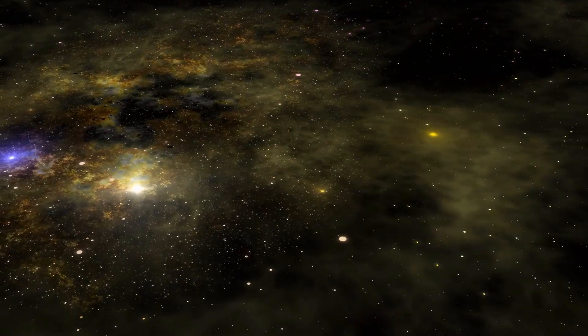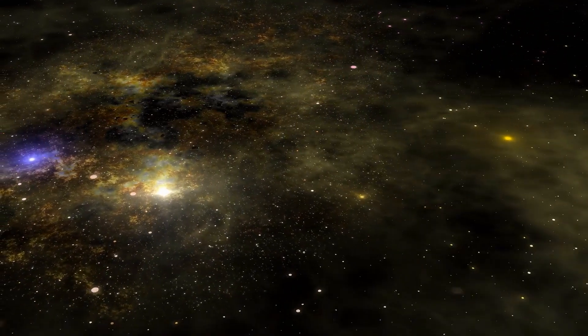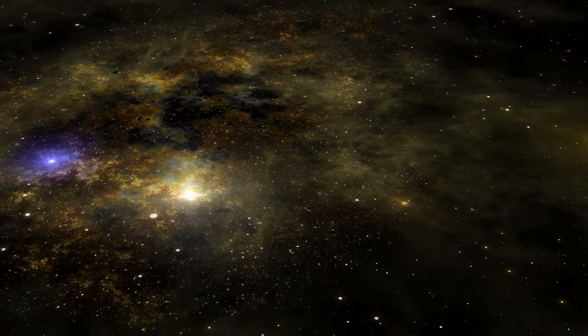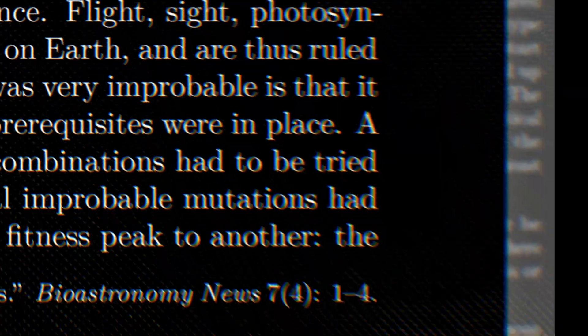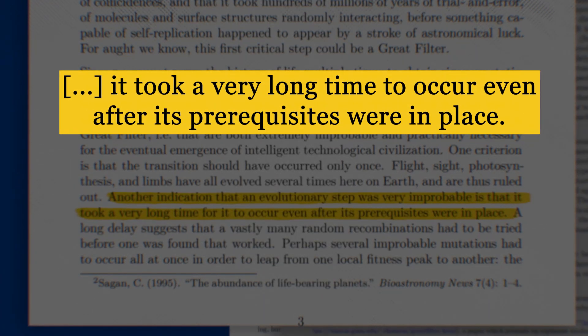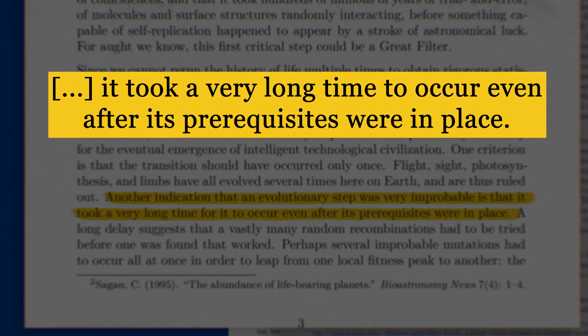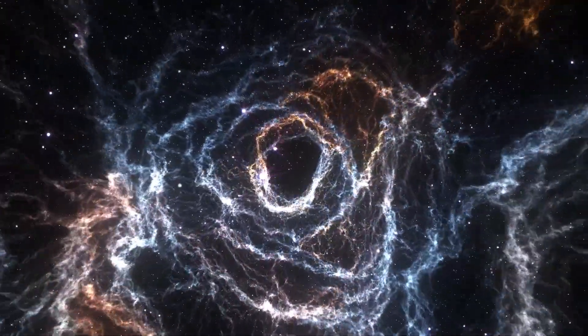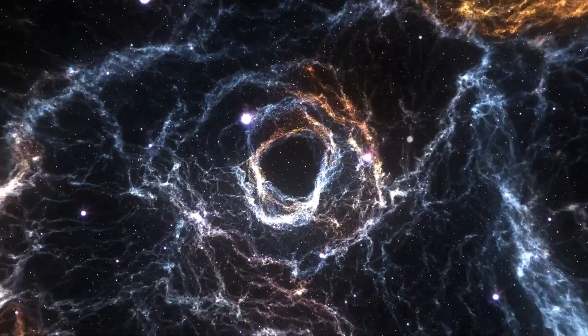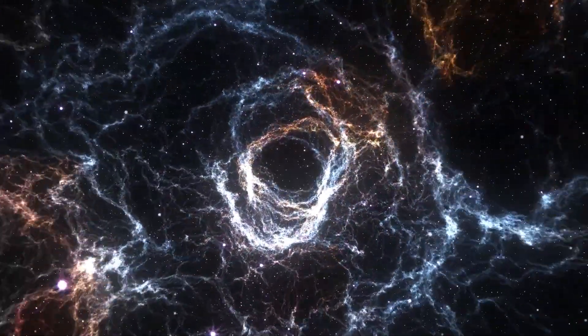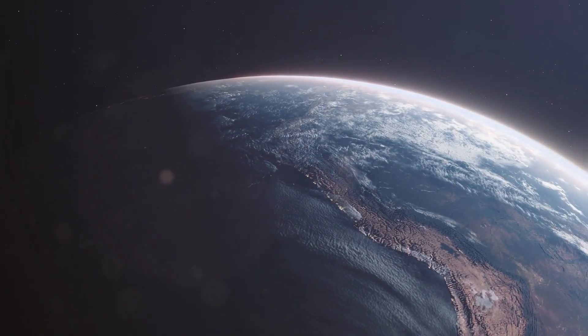But what about you? Can you imagine any other candidate for the Great Filter by looking only at the first criterion? This brings us to the second criterion, which states that the event we are analyzing needs to take a long time to happen, even if the conditions are favorable. The idea here is that passing through a Great Filter is so unlikely that we indeed need a lot of time, which means many chances for an event to actually happen.